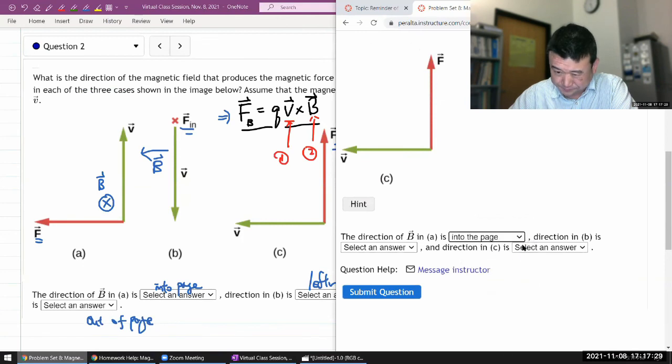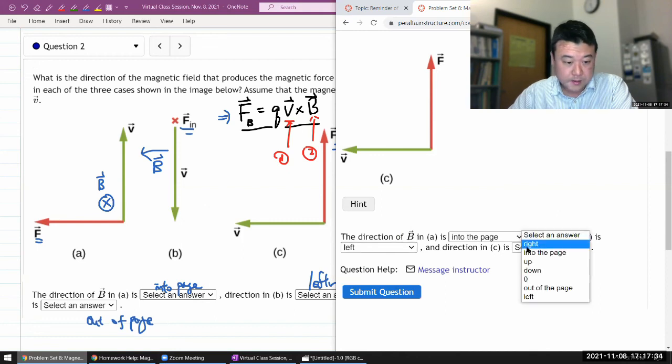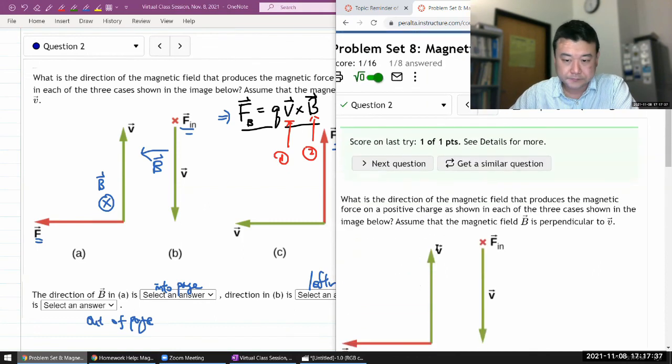Into page. Wait, this is B. Leftward and C out of page. So, go.